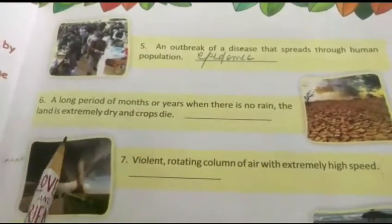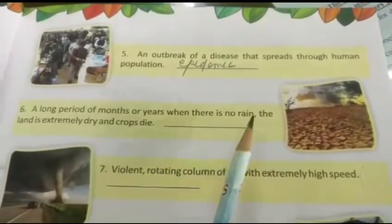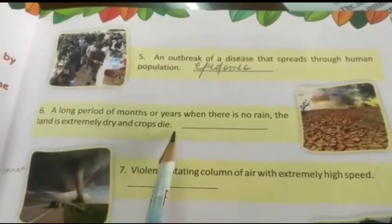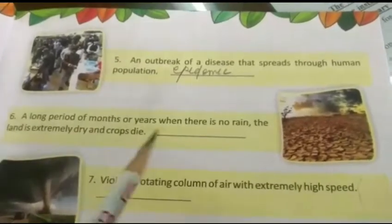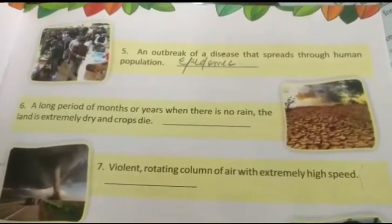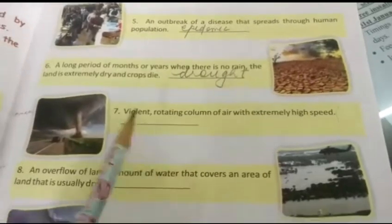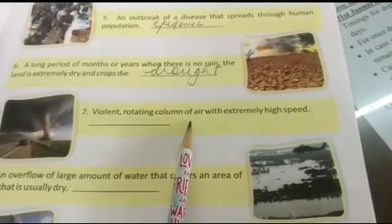A long period of months or years when there is no rain, the land is extremely dry and crops dry up — that is called drought. It commonly occurs in deserts where rain does not come. When drought happens, the population and animals in that area suffer a lot of pain.